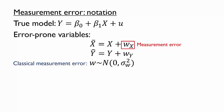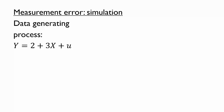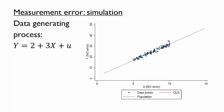To better understand how classical measurement error affects a model's results, let's consider a simulation. We can easily use statistical software to generate a series of x and y observations according to a data-generating process: y equals 2 plus 3x plus u, where u is a normally distributed random error. Here is a simulated dataset that follows this data-generating process. The graph also shows a line representing the population relationship, which we know because we generated the data according to this relationship.